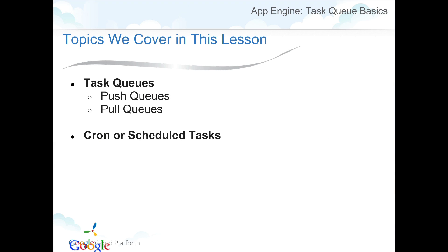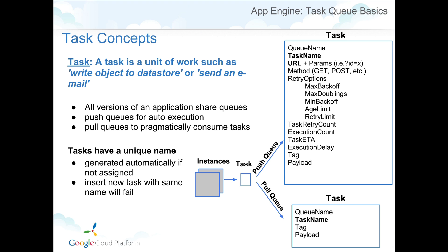What is Task Queue and why is it so useful? The different kinds of Task Queues we have are the push and the pull queue, as well as cron jobs or scheduled tasks. A task is just a unit of work. For example, writing an object to the data store or sending an email — something that could be a compartmentalized unit of function or something you'd want to run out of the user context.